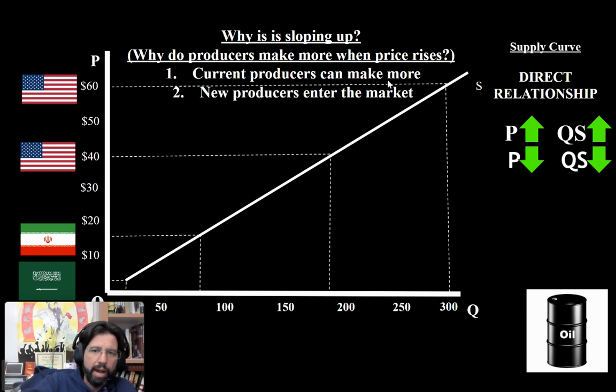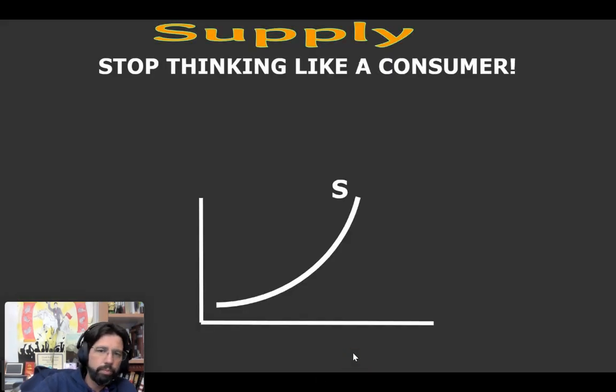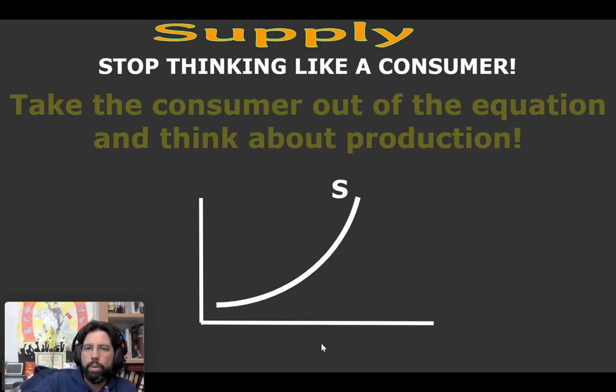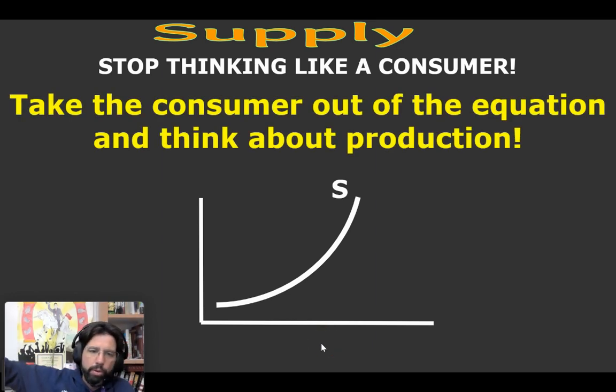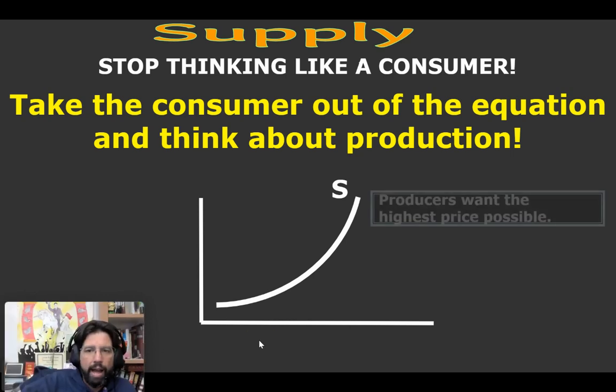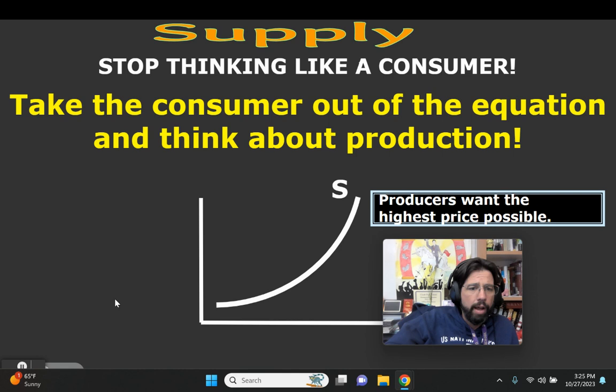So when you're thinking about supply, get rid of the consumer. Take the consumer, the buyer, out of the equation. Think purely about the idea of getting the highest price possible. Think about the law of supply. Price goes up, quantity supplied goes up.